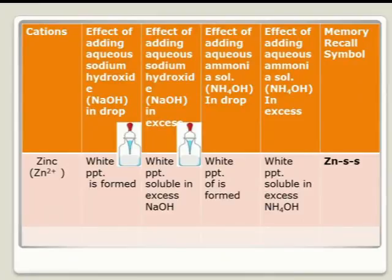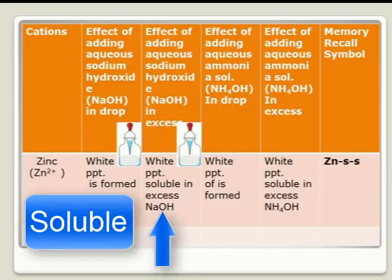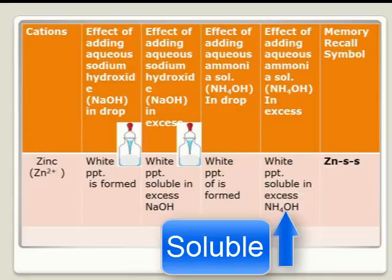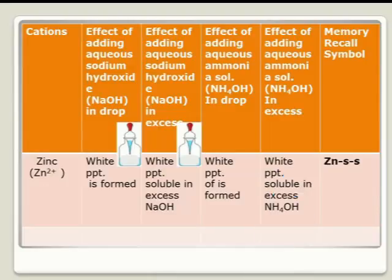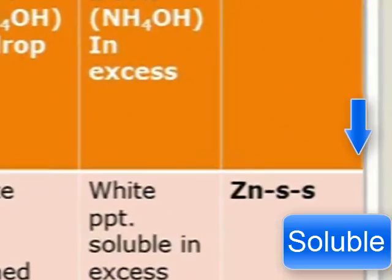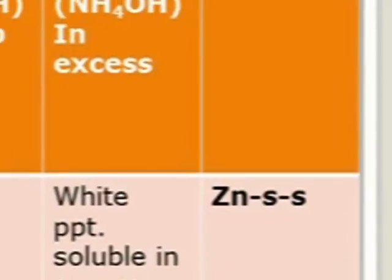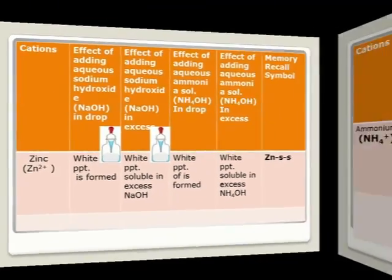Zinc is similar to the previous ions, but zinc is soluble in both excess sodium hydroxide and excess ammonium hydroxide. Zinc also forms a white precipitate, but it is soluble in excess sodium hydroxide and soluble in excess ammonium hydroxide. The recall symbol is Z-N-S-S: ZN stands for zinc, the first S stands for soluble in excess sodium hydroxide, and the second S stands for soluble in excess ammonium hydroxide.